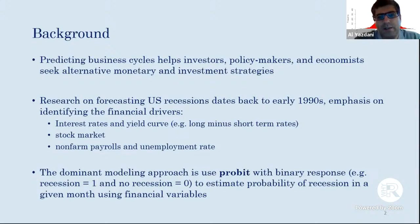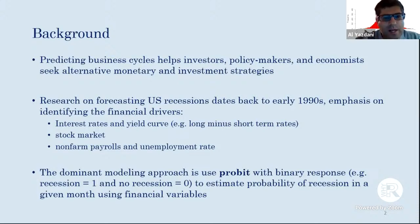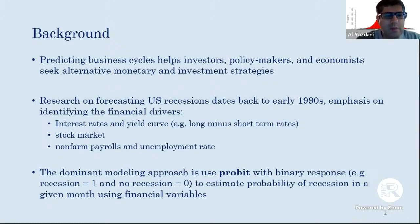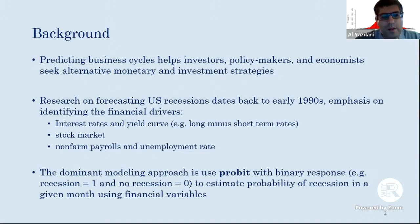Research on forecasting U.S. recessions dates back to the early 1990s. The emphasis in the econometrics literature has been to identify main financial drivers such as various interest rates, the yield curve spread (difference between long and short-term interest rates), the stock market, unemployment rates, and non-farm payrolls. The dominant modeling approach has been using a probit model with a binary response of recession versus non-recession to estimate the probability of recession in a given month.